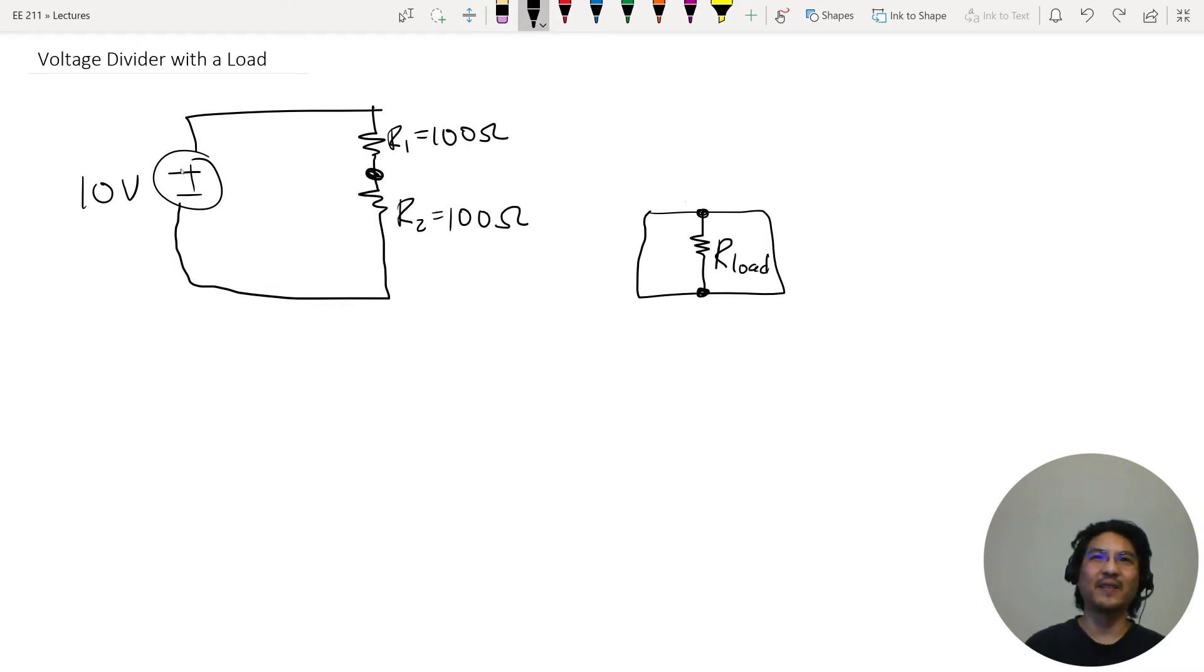So now I can take this and give this load 5 volts, but is it really 5 volts? What happens is by attaching the load I basically screwed up my voltage divider because look, these are in parallel now. Let me just redraw it.